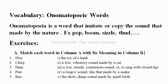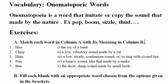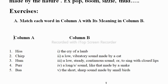So let's try to solve the textbook exercises which you have in your third semester textbook. Let's do exercise one. Here you have to match each word in column A with its meaning in column B. In column A you have onomatopoeia words. You have to match these words with their associated sound.